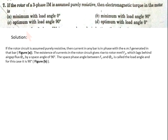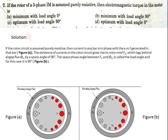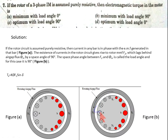Solution: If the rotor circuit is assumed purely resistive, then the current in any rotor bar is in phase with the EMF generated in that bar, as shown in the figure. The existence of current in the rotor gives rise to rotor MMF F2, which lags behind the air gap flux φm by a space angle of 90°. This space angle between F2 and φm is also called the load angle. For this case, load angle is 90°, and the interaction between the stator field and rotor field is optimum at load angle 90°, as given by the electromagnetic torque equation. So option C is correct.